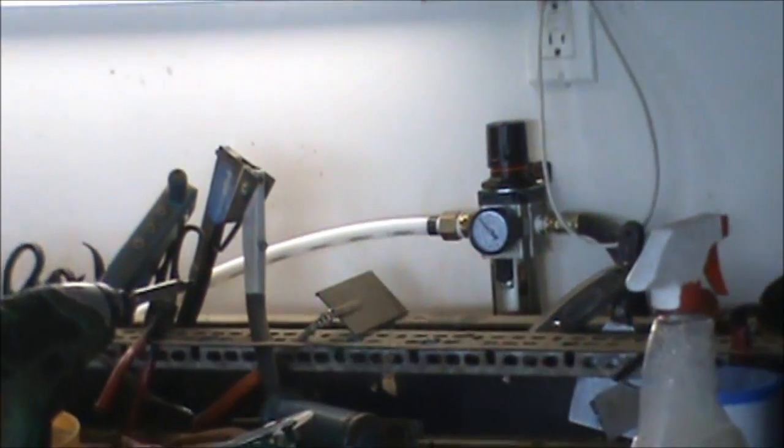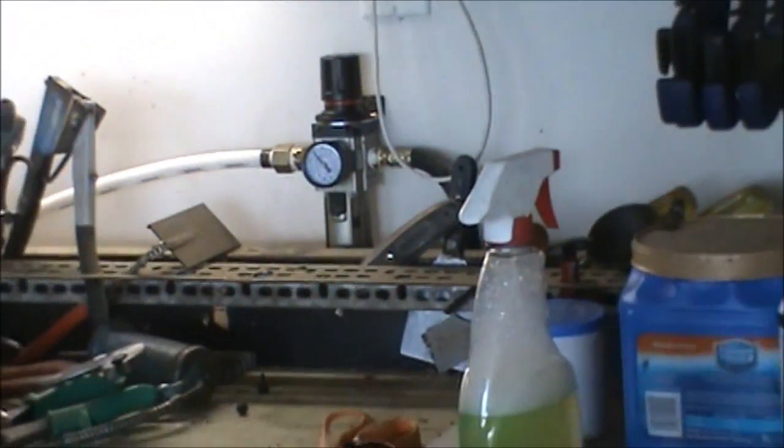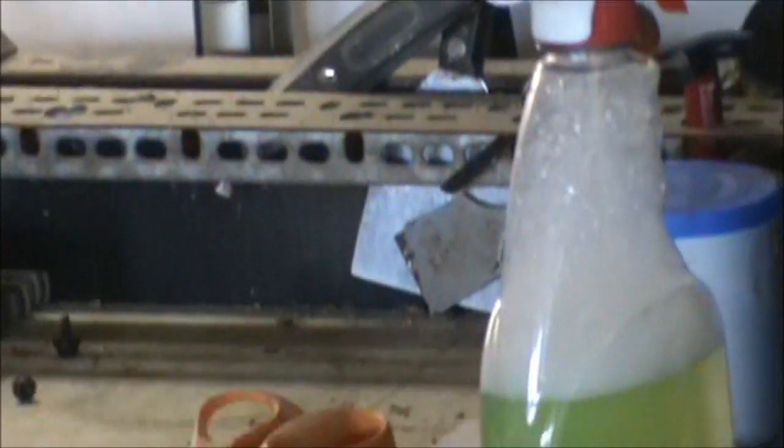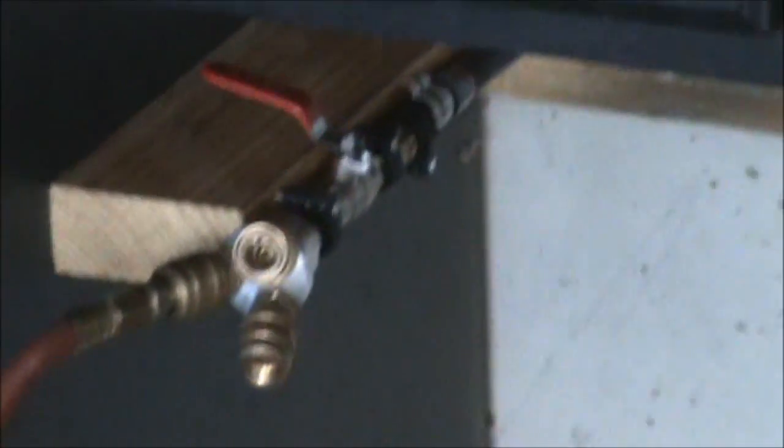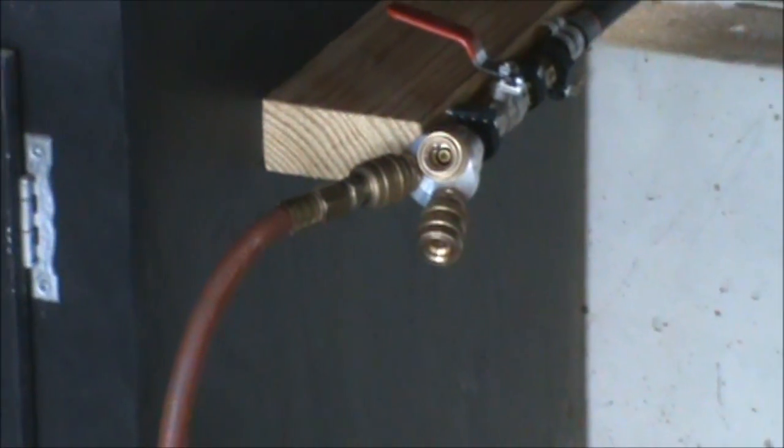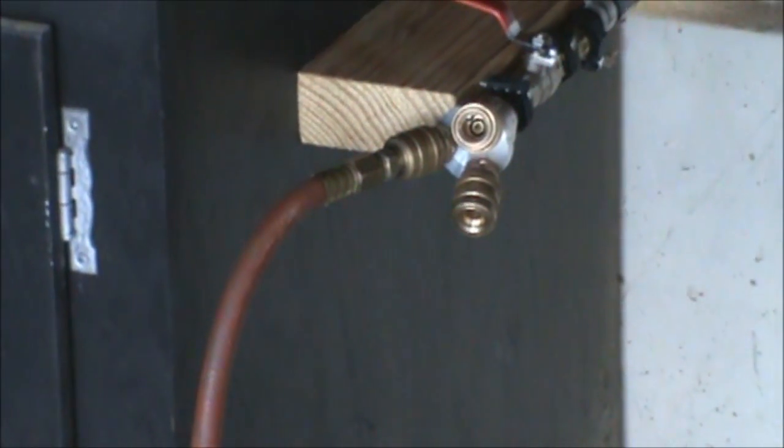And the air coming out of that regulator follows that black hose and it goes down underneath the workbench. And I've set up a cow udder, so I've got it set up so that I can hook up up to three different sources of air.